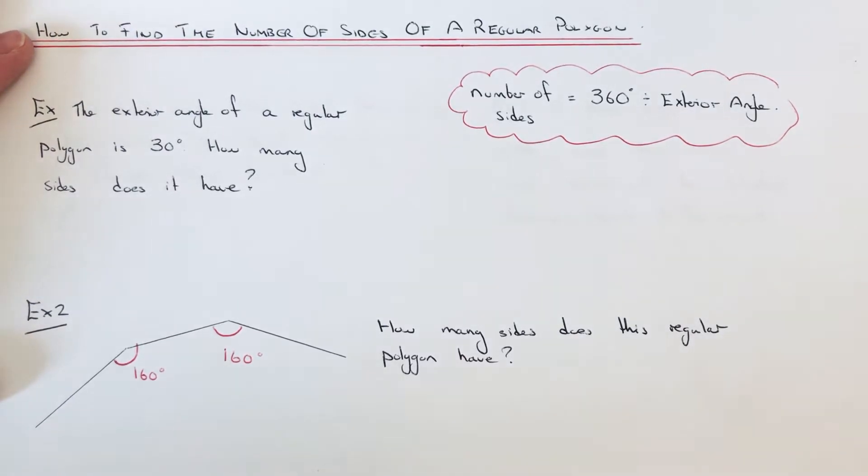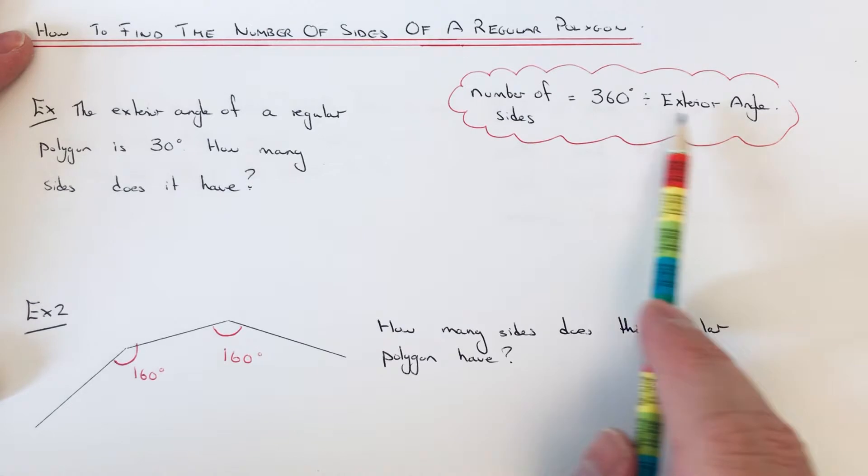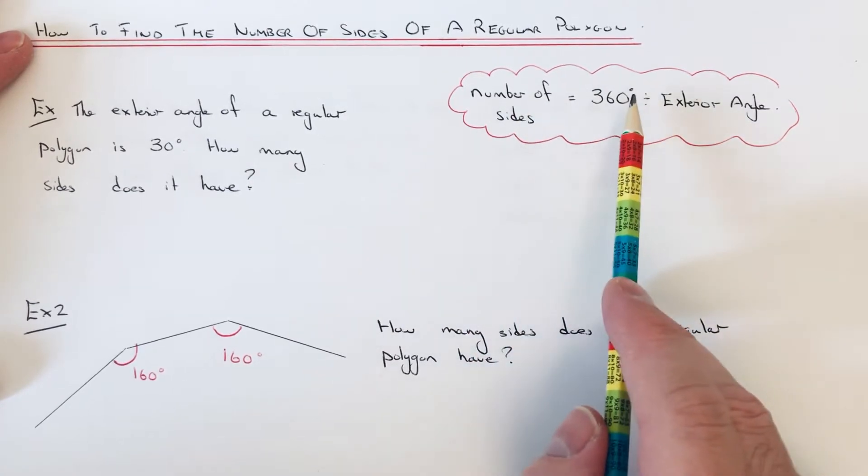Hi guys, welcome back. This is Maths 3000. Today I'm going to show you how to work out the number of sides of a regular polygon. To do this, you need to remember this formula in the red cloud. The number of sides is equal to 360 divided by the exterior angle.